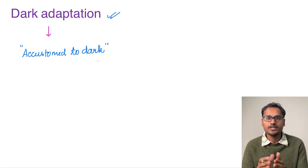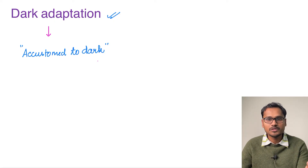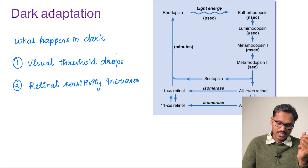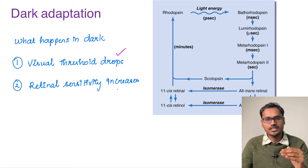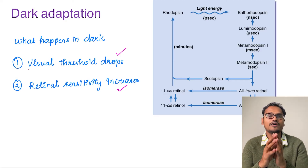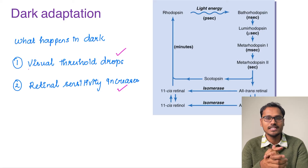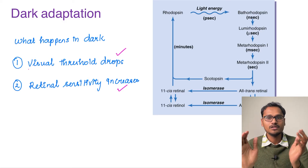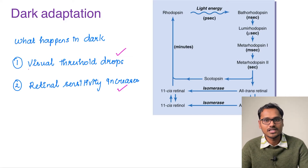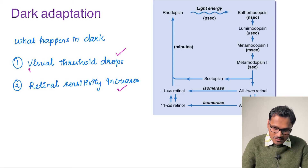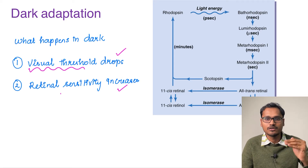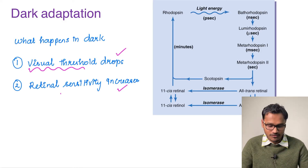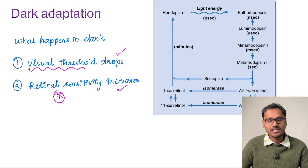Dark adaptation means whenever you are entering into a dark room, the eye gets adapted and accustomed to the environment — that property is called dark adaptation. In dark adaptation, something called the visual threshold, the threshold for vision, drops and the retinal sensitivity increases. All of us would have experienced this: whenever you enter a theater room, initially you cannot spot the chairs, but after some time you are able to spot the objects around you. This happens because the visual threshold comes down and retinal sensitivity increases.